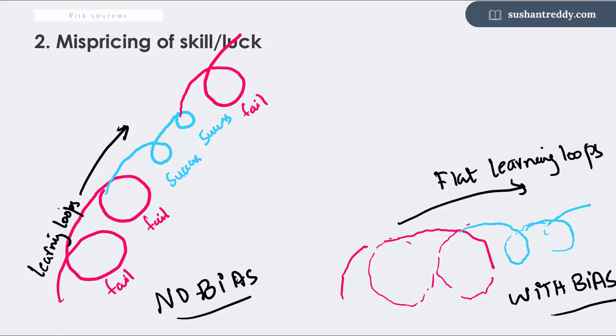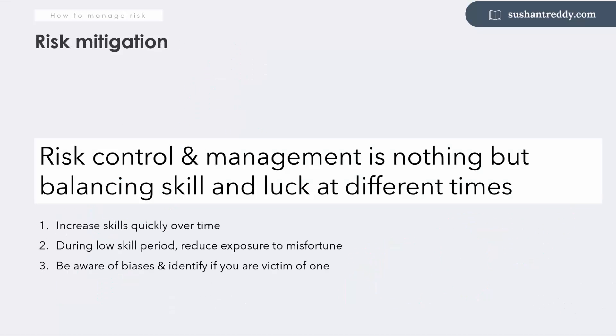Now let's come to the key aspect of this episode: how to control and manage risks during the period of low skill. The answer lies in all the previous topics we spoke about. Here is my prescription for reducing risks in decision making for startups especially in the early years: one, increase skills quickly over time. When skills are low, keep your exposure to negative luck at a low level. Three, constantly review if you are victims of some form of bias and correct yourself promptly.